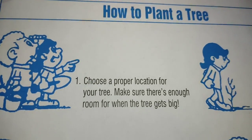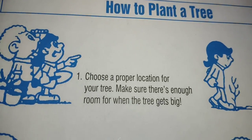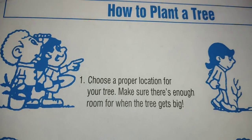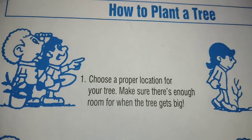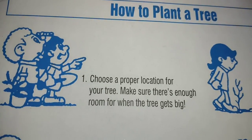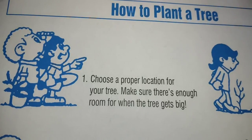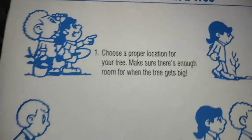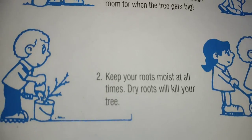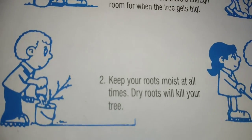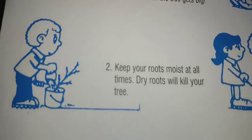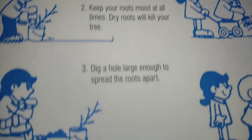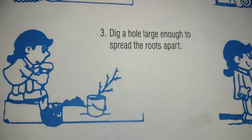If you like, don't forget to thumbs up and share this in your group. Our first step is: choose a proper location for your tree — make sure there is enough room for when the tree gets big. Our second step is: keep your roots moist at all times, as dry roots will kill your tree.